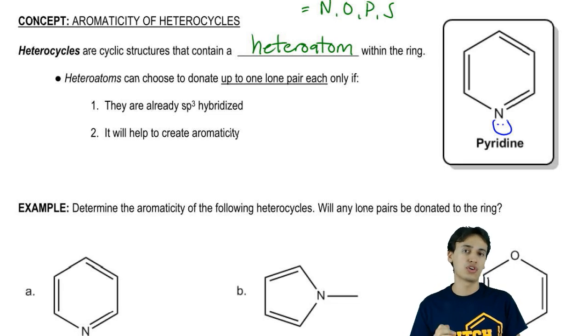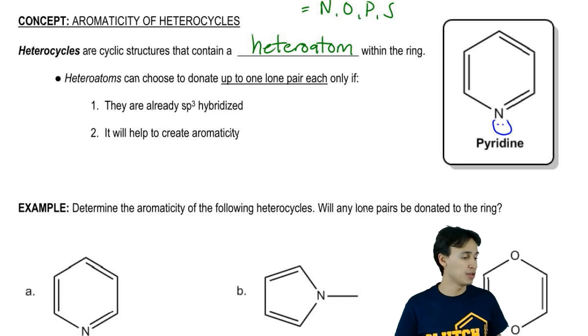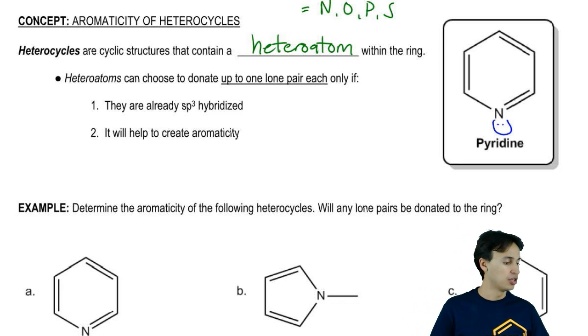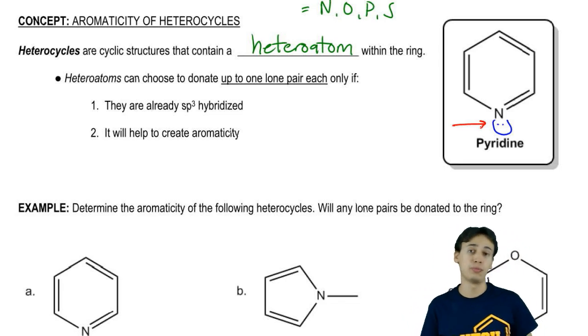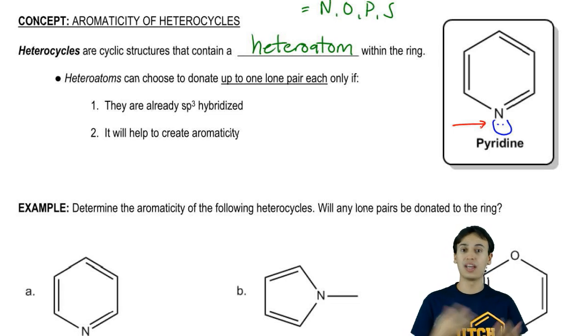But for right now, we have to understand that heterocycles are going to present one extra complication to figuring out aromaticity which is that typically a heteroatom is going to have one or more lone pairs on it. The question is going to be, do I count that lone pair towards the pi-conjugated system? For pyridine, would I go ahead and count this lone pair towards the total sum of electrons to determine Huckel's rule or would I ignore it?